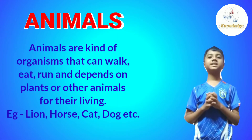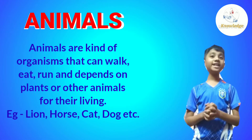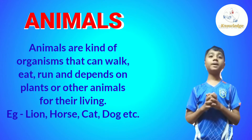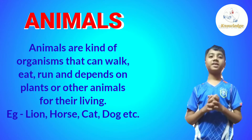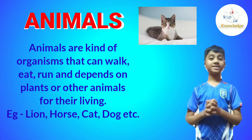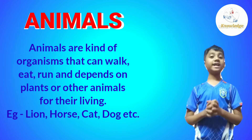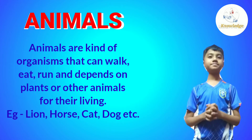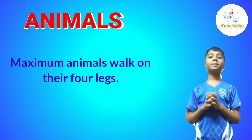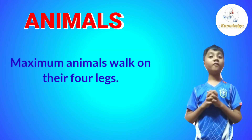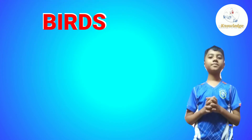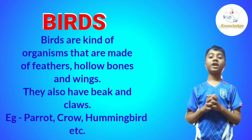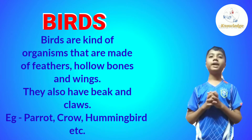Animals are a kind of organism that can walk, eat, and run, and depend on plants or other animals for their living. For example, lion, horse, cat, dog, etc. Most animals walk on their forelegs.